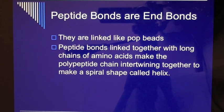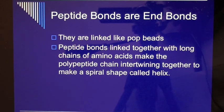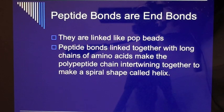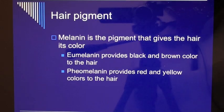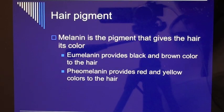Peptide bonds are end bonds linked like pop beads. Peptide bonds linked together with long chains of amino acids make the polypeptide chain, which intertwines to make a spiral shape called a helix.